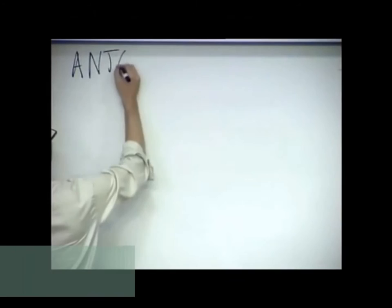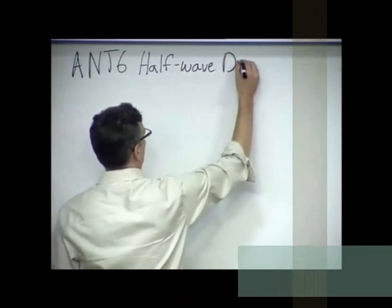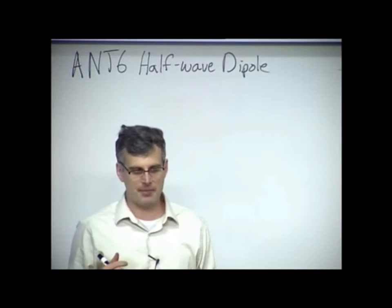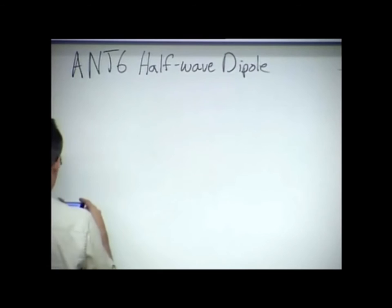And T6, the half-wave dipole and related antennas. So let's make a chart. This is going to be a chart in your notes that talks about common types of antennas. They're related to the half-wave dipole.